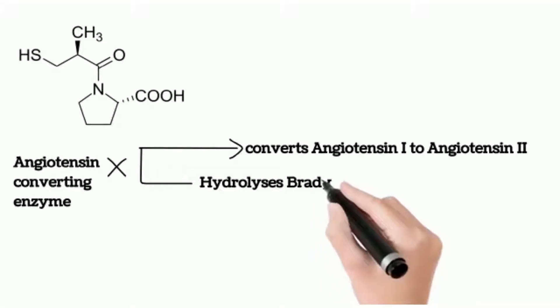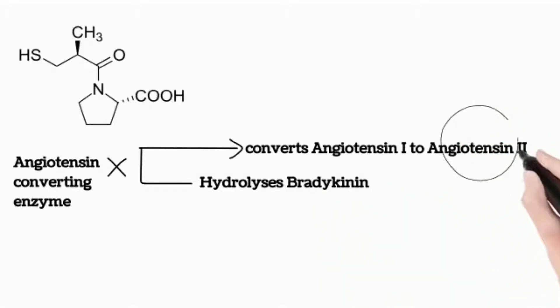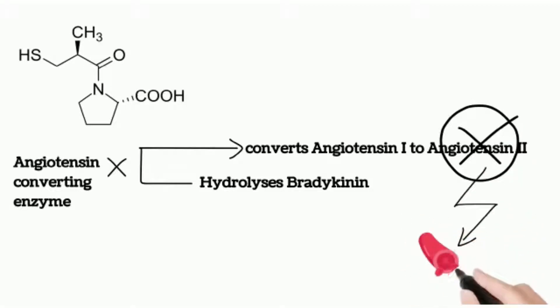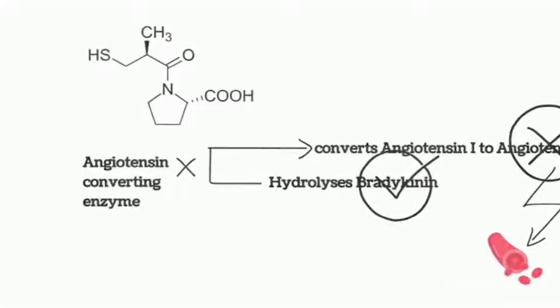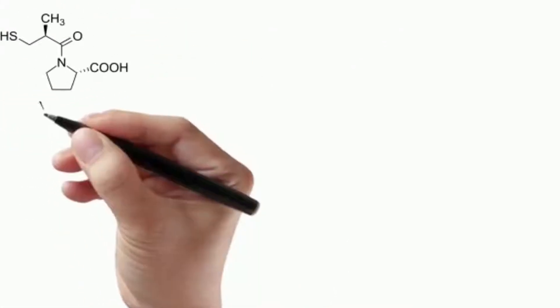Therefore, ACE inhibitors decrease the formation of angiotensin-2, a vasoconstrictor, and increase the level of bradykinin, a peptide vasodilator. This combination is synergistic in lowering blood pressure.